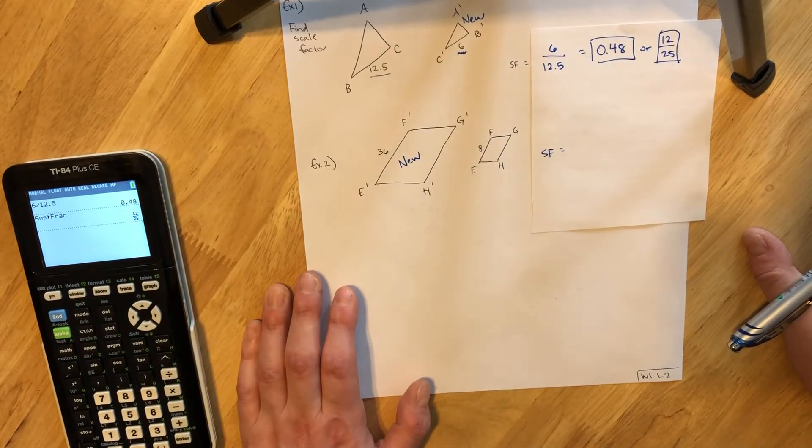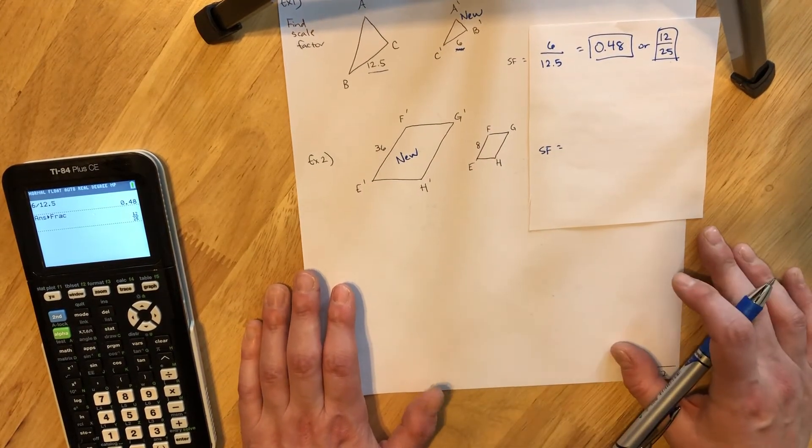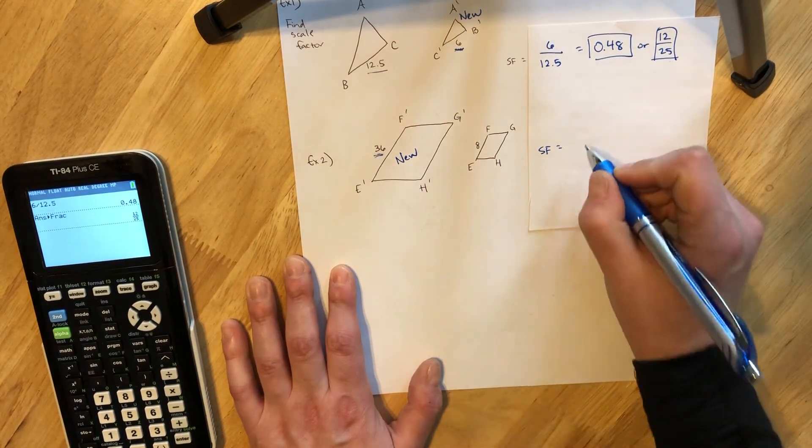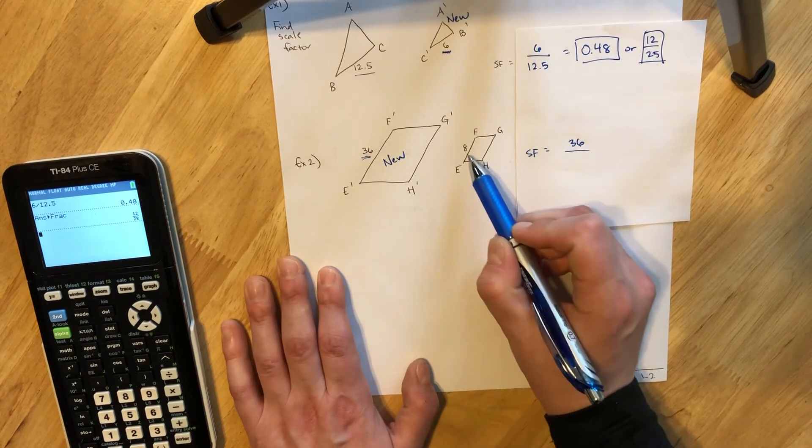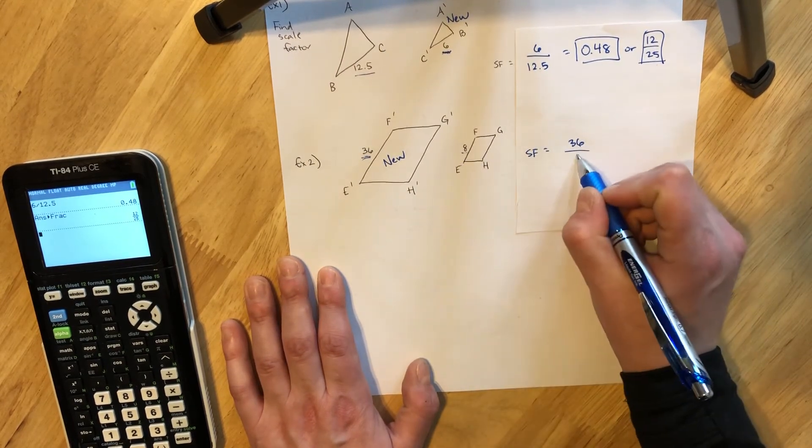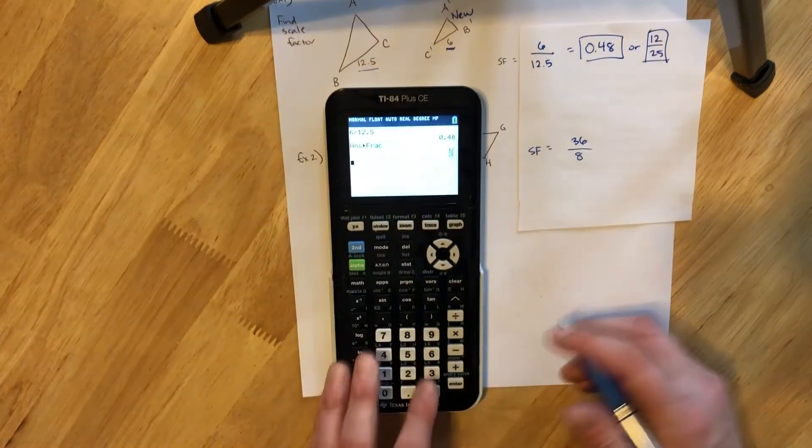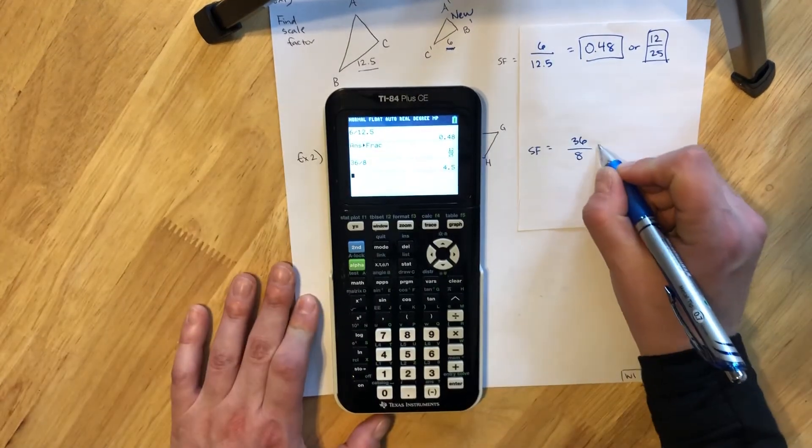So if we're finding the scale factor for this dilation, for this change, we would want to use the new side length, the 36, and divide by the corresponding length in the old shape. So we're going to take 36 divided by 8.